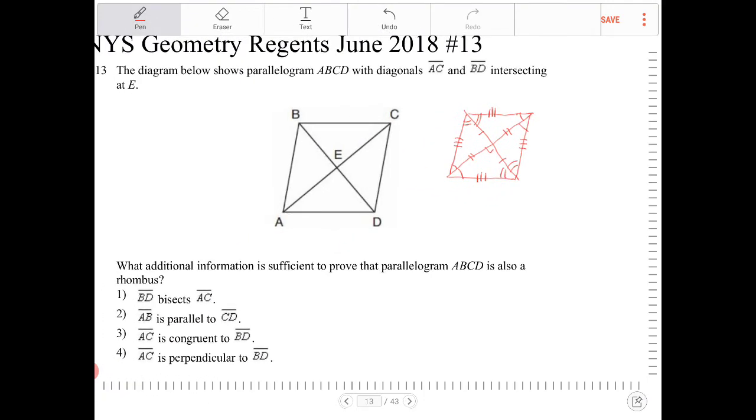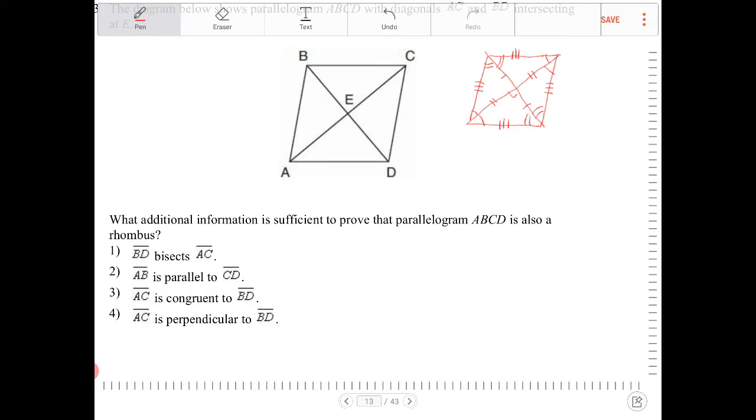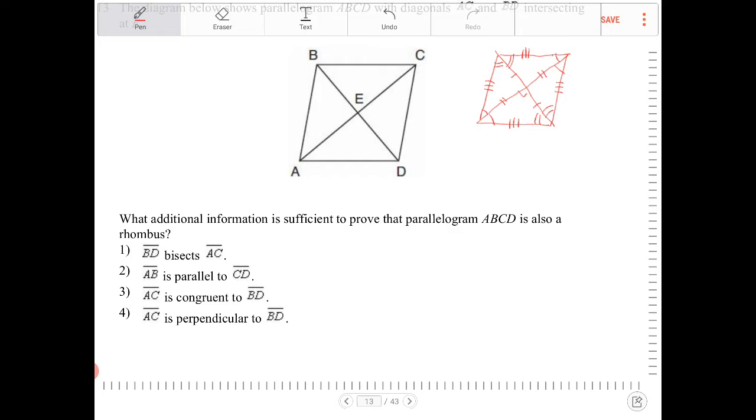So let's see if any of the options here satisfies any of the conditions that I just outlined. BD bisects AC. That is true for all parallelograms. So option one is not correct.